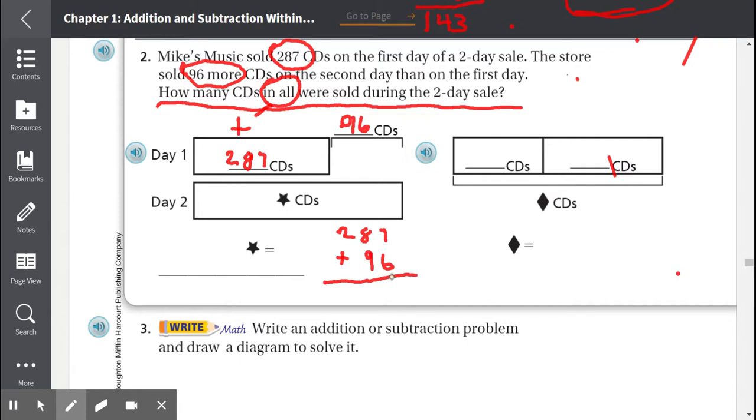7 plus 6 is 13, we carry our 1. 1 plus 8 is 9, and 9 plus 9 is 18. We carry our 1. 1 plus 2 is 3. So day two, how many CDs were sold? 383.